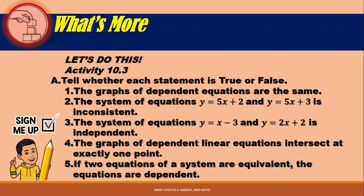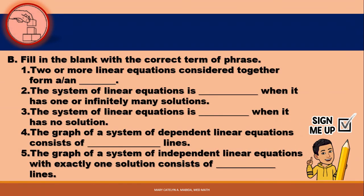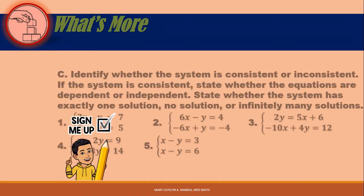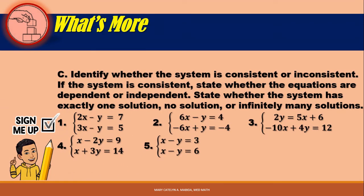Now let's do this. Activity 10.3 has three parts. Part A: tell whether each statement is true or false — there are five statements to work on. Part B: fill in the blank with the correct term or phrase — there are five numbers to work on. Part C: identify whether the system is consistent or inconsistent; if the system is consistent, state whether the equations are dependent or independent, and also state whether the system has exactly one solution, no solution, or infinitely many solutions.